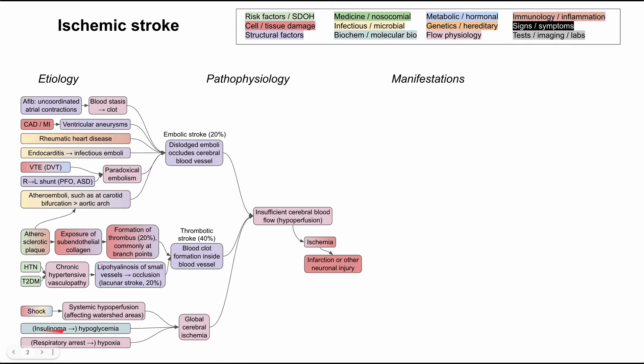You can also have global cerebral ischemia through hypoglycemia, such as if you have an insulinoma or in poorly controlled diabetics. You can also have it through hypoxia, such as in respiratory arrest.